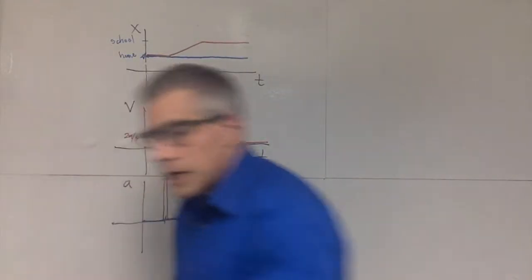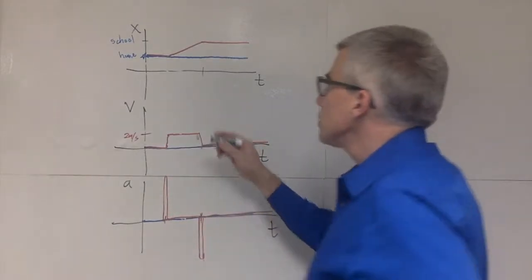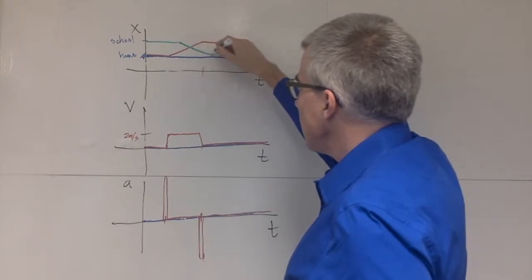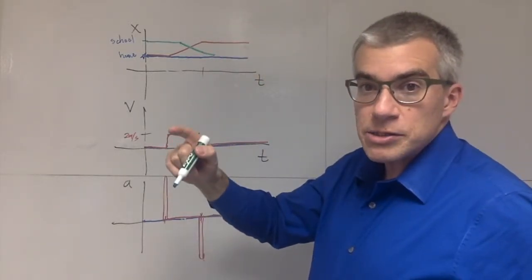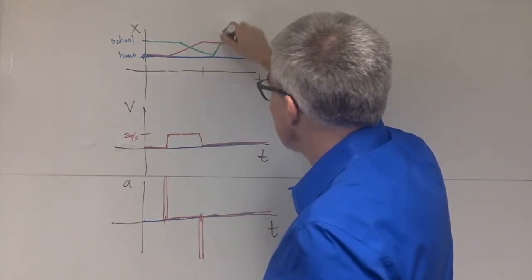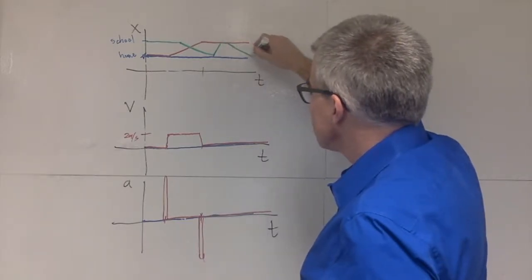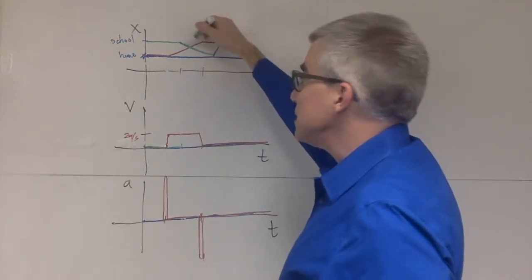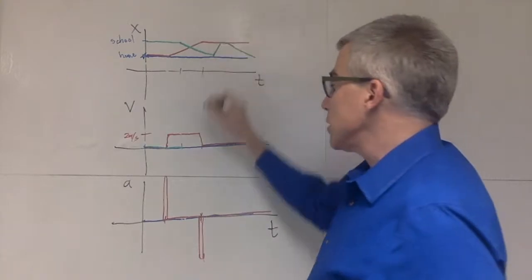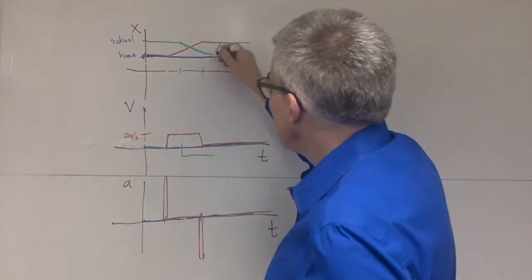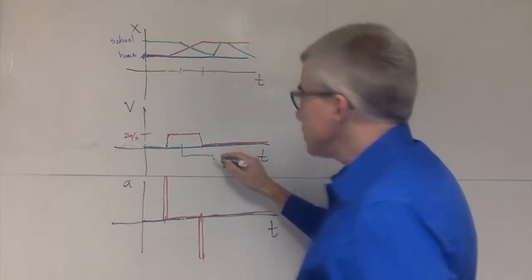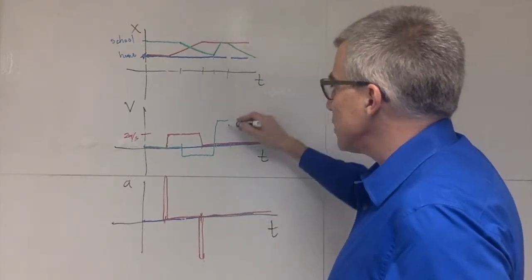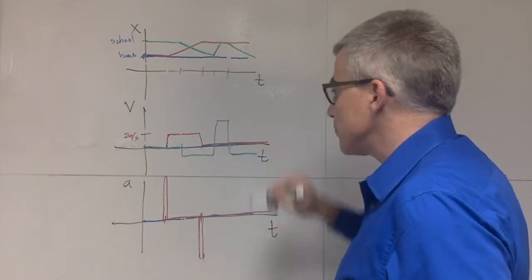Now, suppose we are at school and we decide to go home. So we're at school. And then at this point, we decide to walk home. And we're almost home and we realize that we forgot something and we need it. So we hurry back for it. So we go like this back to the school. And then we go back to walking home. What does this look like for velocity? The velocity was nothing until this point in time. And then we acquired a negative velocity, a small negative velocity, because we're walking home. And then at this point in time, we suddenly turned around and had a large positive velocity. And we kept that up for a short time.